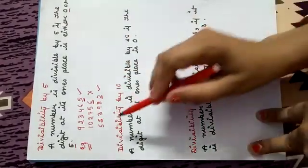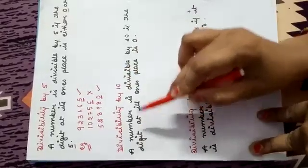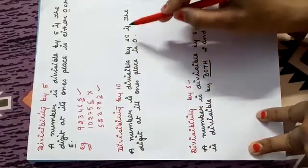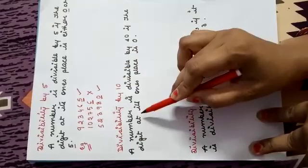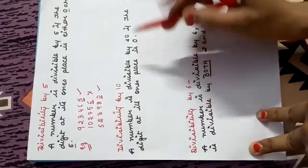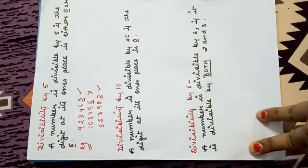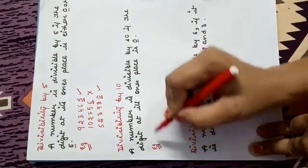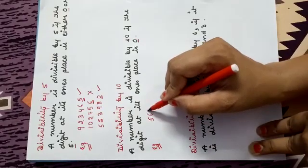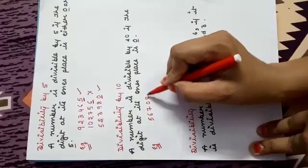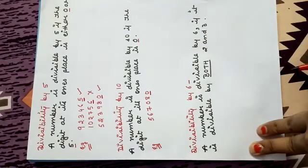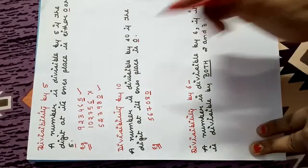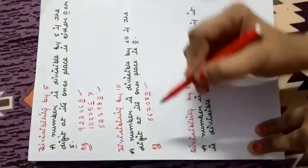Divisibility by 10: A number is divisible by 10 if the digit at its 1's place is 0. If the digit at 1's place is 0, that means the number, however large it may be, is divisible by 10. For example, 567080 — at 1's place there is 0, so it is divisible by 10.